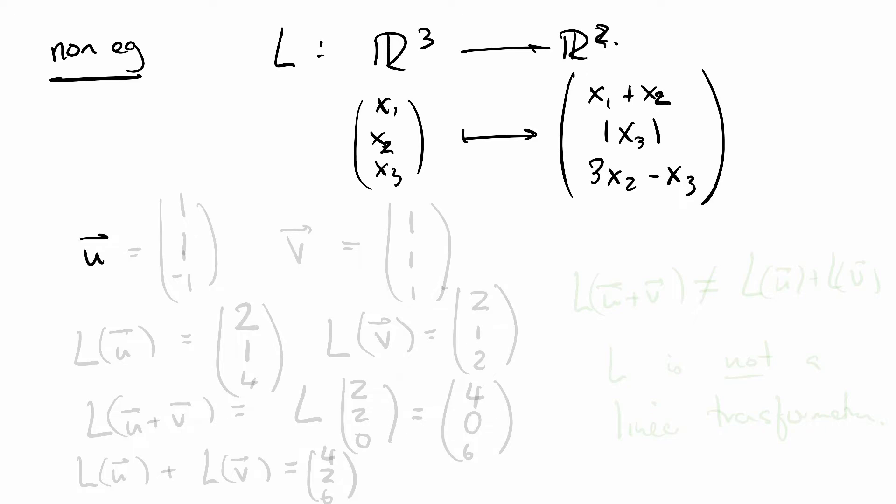Say u is equal to 1, 1, negative 1, and v is equal to 1, 1, 1. Notice a few things. L of u is going to be 2, 1, 4. L of v is equal to 2, 1, 2.